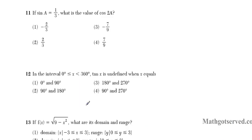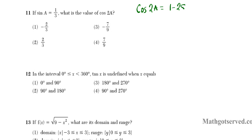In question 11 it says: if sine a is 1 over 3, what is the value of cosine 2a? If you refer to your reference sheet, there is a formula for the double angle identities for cosine. There are 3 variations for the double angle identity for cosine.